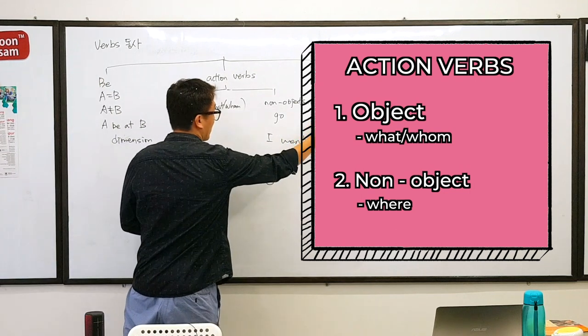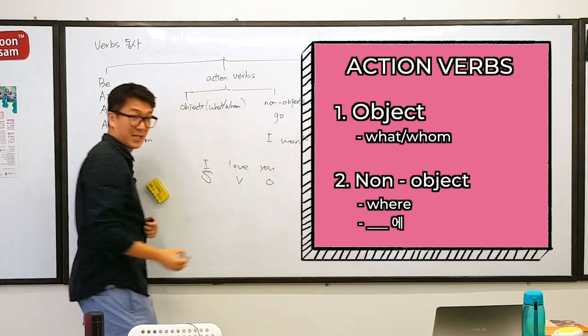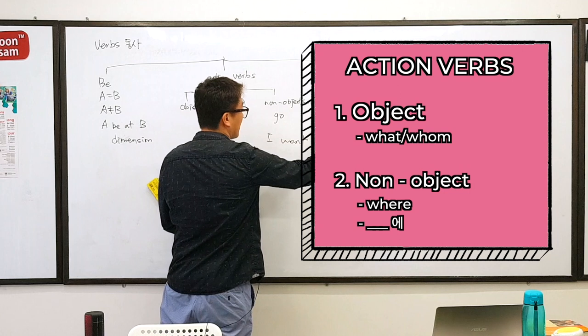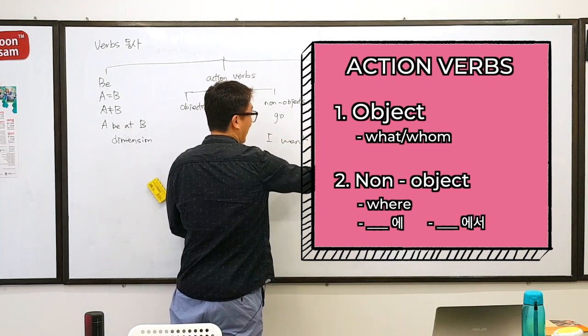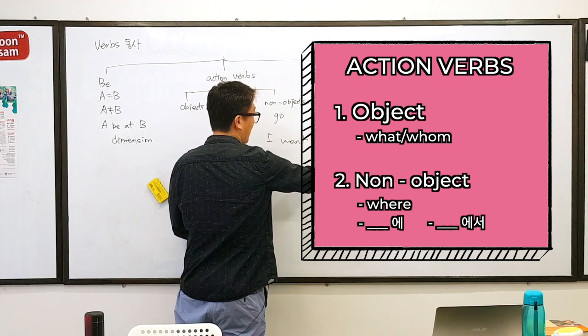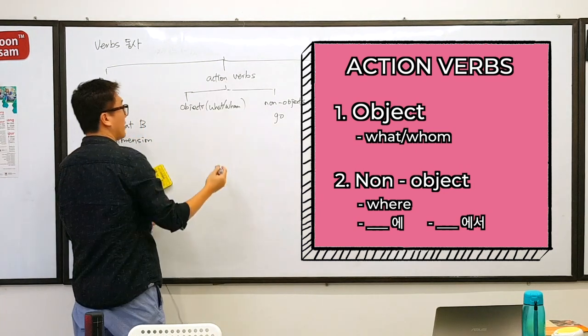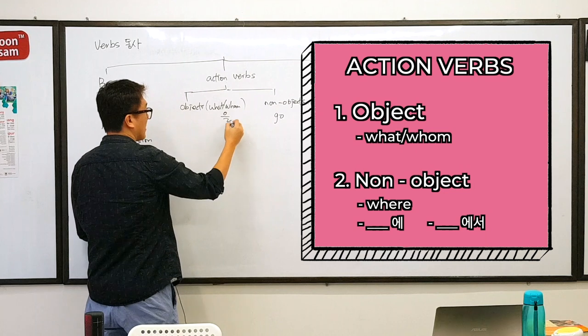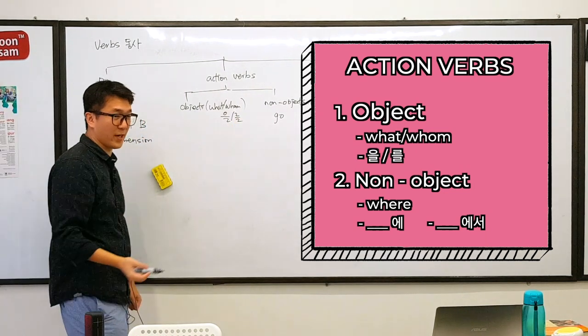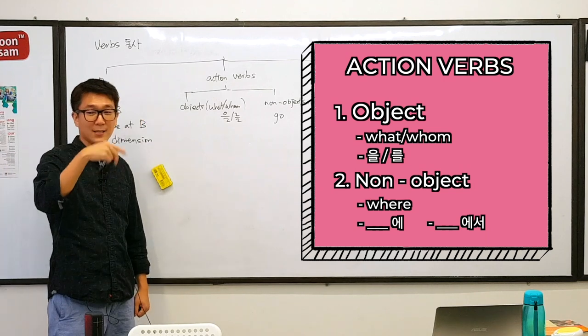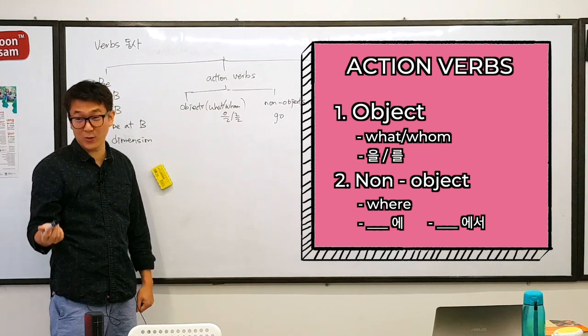This one requires 에. In general. Possibly, but generally 에. Possibly 에서. 에서 is like from. Here, what and whom requires 을을. So, I love you. In fact, 저는 당신을 사랑해요. Now,